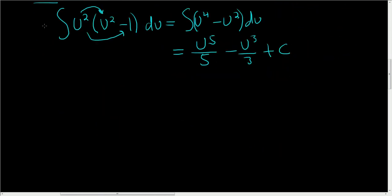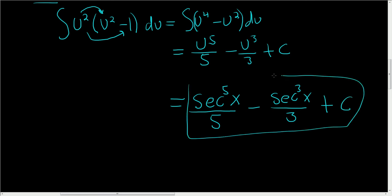And the last thing to do is replace u with secant. So we end up with secant to the fifth power of x over 5 minus secant to the third power of x over 3 plus our arbitrary constant. And that is the final answer.